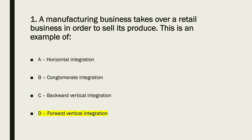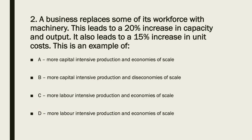Question two: the answer relates to capital-intensive production, because the workforce has been replaced by machinery — moving from labour towards capital — so it's A or B. A 20% increase in output has led to a 15% increase, not decrease, in unit costs, so it has to be diseconomies. Capital-intensive and diseconomies: the answer is B.